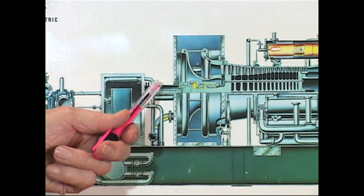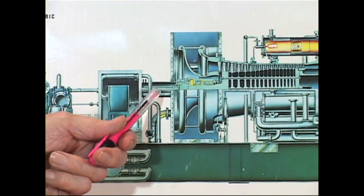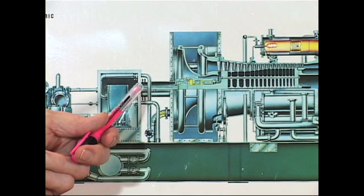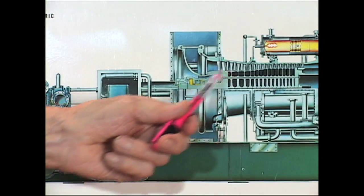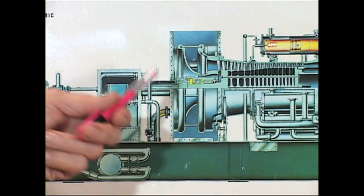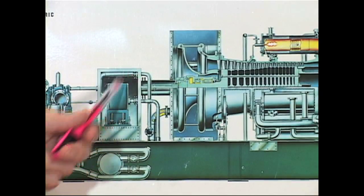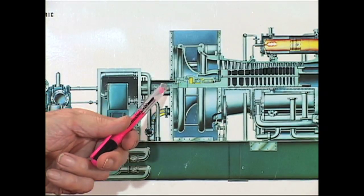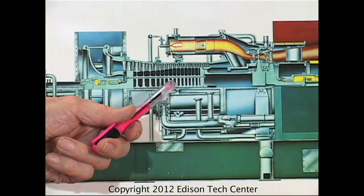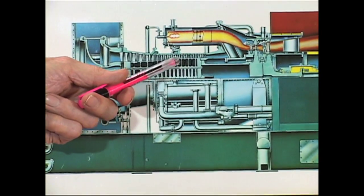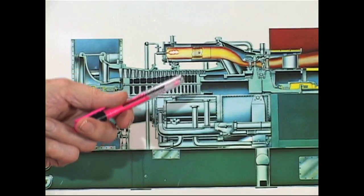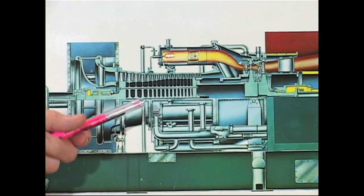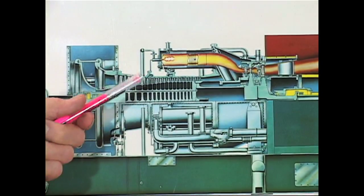And at that point, the clutch, the clutch here between the starting means and the compressor shaft, that uncouples and the starting means shuts down and the turbine accelerates up to the full speed point. And then the control system takes over and governs the speed from that point on.